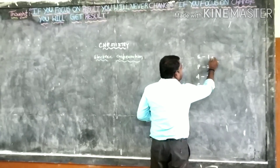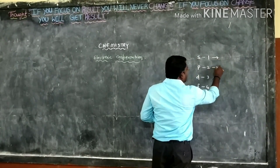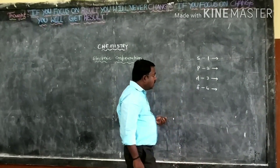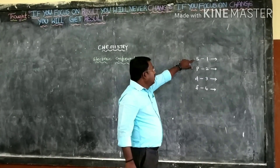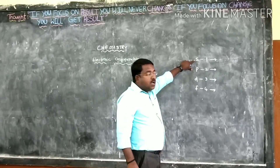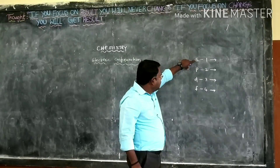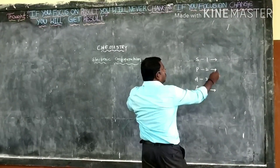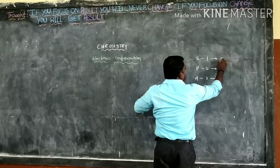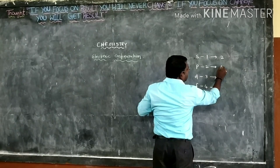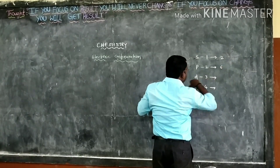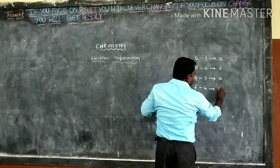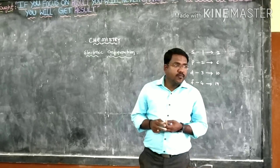The second step is the maximum electrons stored in orbitals. How many maximum electrons are in S orbital? Two electrons. Then P orbital? Six. D orbital? Ten. F orbital? Fourteen.